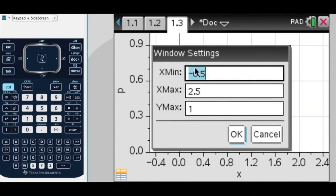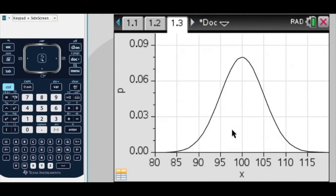I want my x min to be about 3 or 4 standard deviations below 100. So, let's try 80, and then my maximum should be 120, and now my y maximum, it needs to be really small to be able to plot a probability. So, we'll make it 0.1, and there it is, there's my normal curve.